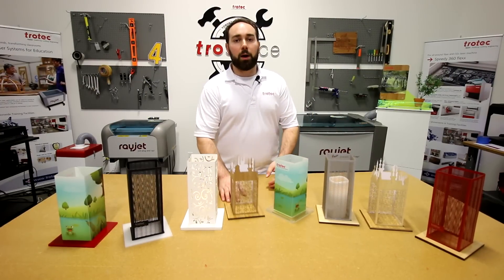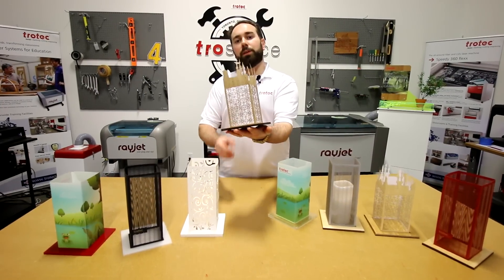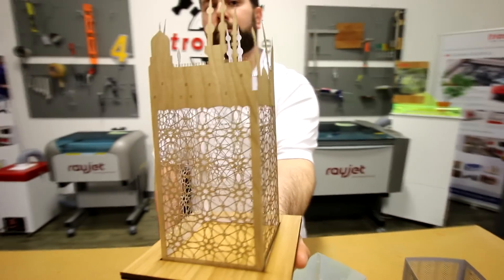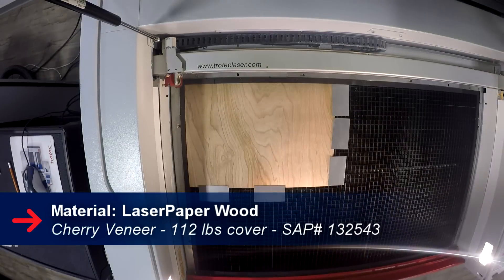Next we'll show you how we made our lantern made of laser paper wood veneer. We first took our cherry laser wood veneer and placed it into our Speedy 400. We cut and engraved our design along with score lines.